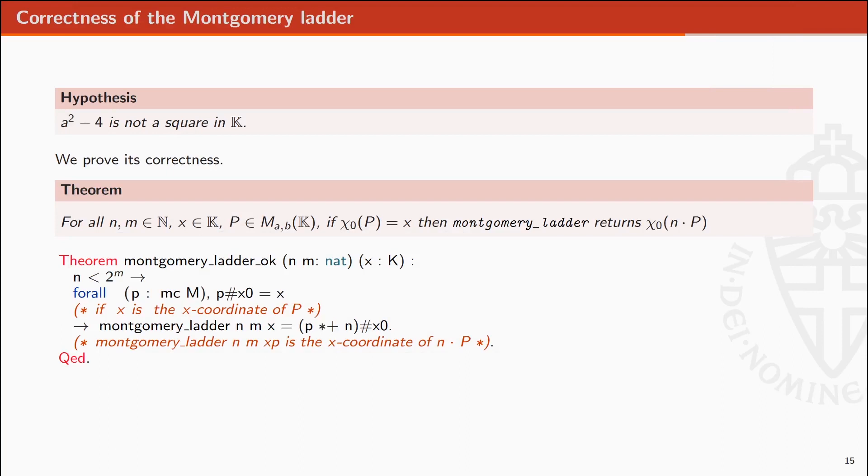Under the assumption that A square minus 4 is not a square in the field K, we formally prove that given a point P on the curve with X-coordinate X, the Montgomery ladder computes the X-coordinate of n times P. This proof is generic over the field K and the elliptic curve parameters A and B.